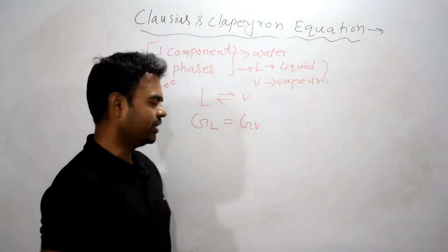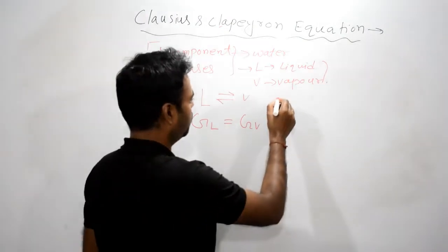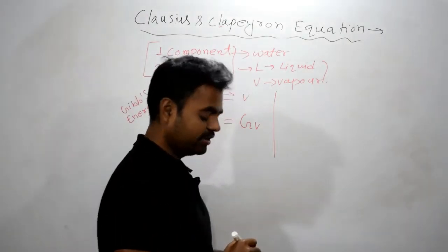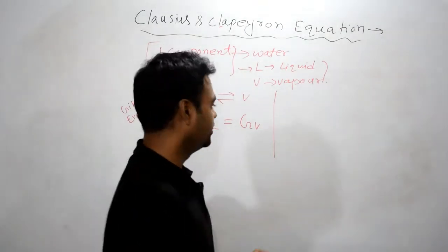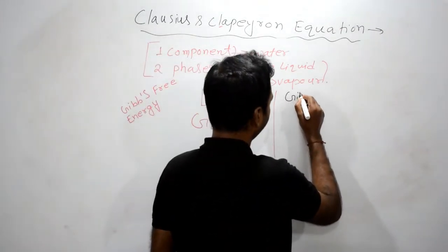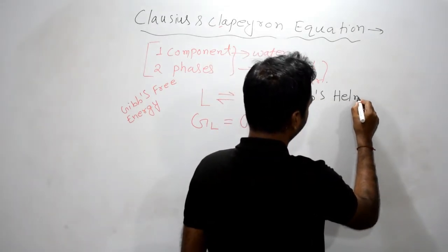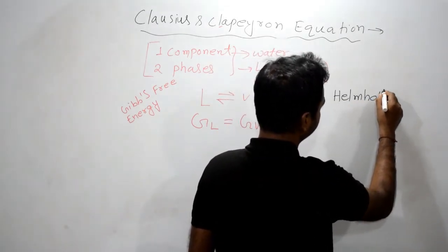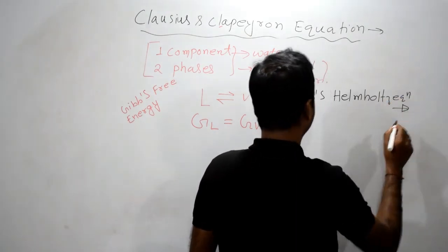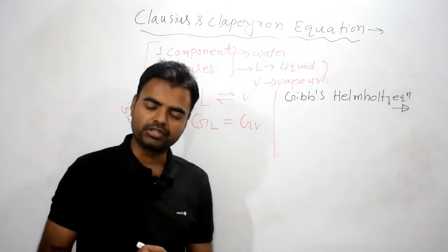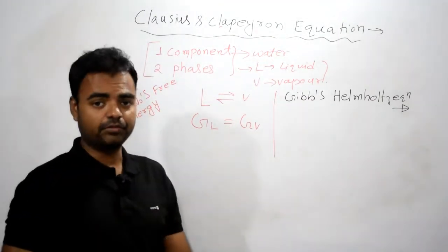L for liquid and V for vapor. Now one important relation you must remember for deriving this equation is the Gibbs-Helmholtz equation. You must derive this equation as it is really important for deriving the Clausius-Clapeyron equation.